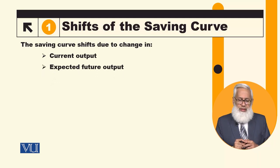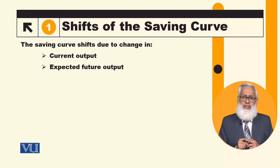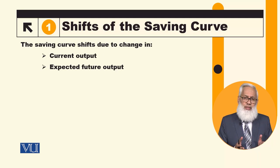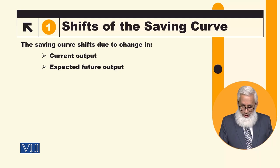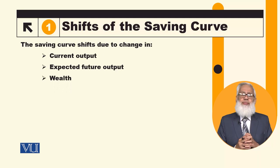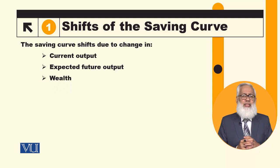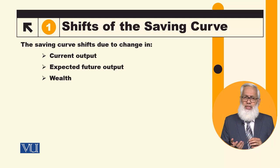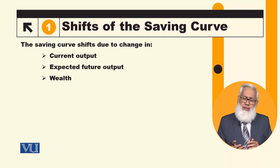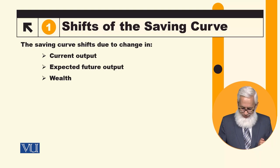If we expect that future output will increase, then the saving curve will shift leftward. Similarly, if wealth increases, we know that consumption will increase, so the saving curve will shift leftward.